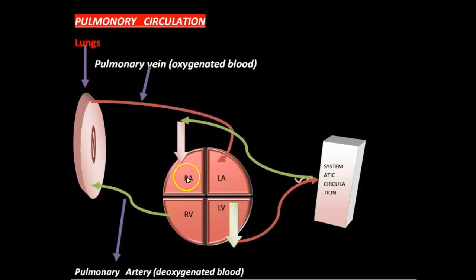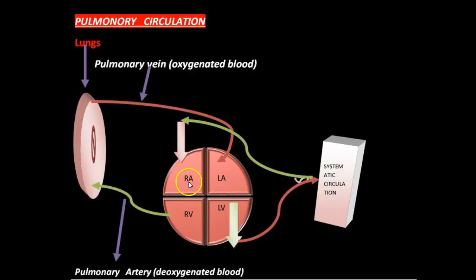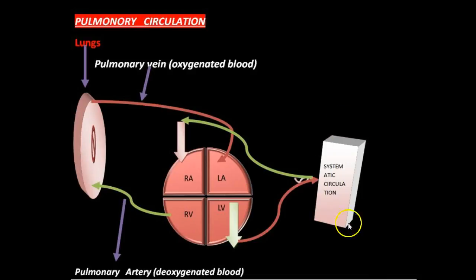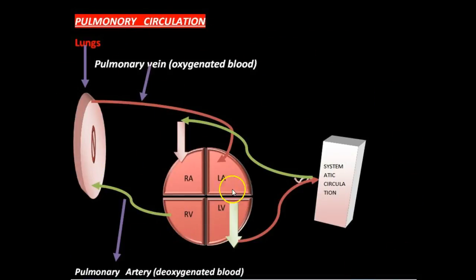The impure blood first reaches the right atrium, then to the right ventricle, then to the lungs through the pulmonary artery. After gas exchange, the oxygenated blood reaches back to the heart in the left atrium through the pulmonary vein, then to the left ventricle, then to the entire body. Again, the deoxygenated carbon dioxide-rich blood reaches the right atrium and so on. In systematic circulation, from the left ventricle, oxygenated blood reaches the organs. After metabolic processes, carbon dioxide is released and deoxygenated blood is carried back to the right atrium. This is the double circulation: pulmonary and systematic.